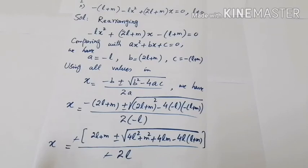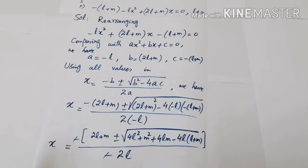Using all values in the quadratic formula: x = [−(2l+m) ± √((2l+m)² − 4·(−l)·(−(l+m)))] / (2·(−l)). Taking minus common from the numerator and denominator, the minus signs cancel. Expanding (2l+m)² using (a+b)² gives 4l² + m² + 4lm, and multiplying the remaining terms gives −4l(l+m).